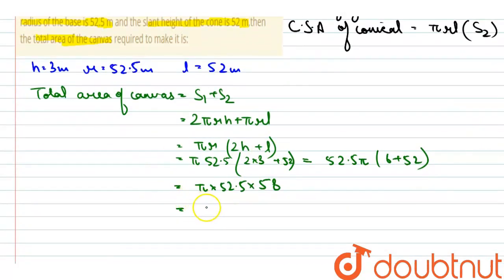So, the final value will be 3045π. Hence, we can say that the total area of canvas will be 3045π, and this is your answer. Thank you.